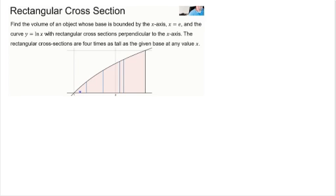Now we have a rectangular cross section. Find the volume of an object whose base is bounded by the x-axis, x equals e. Now notice something. x equals e is a vertical line. So over here is x equals e.